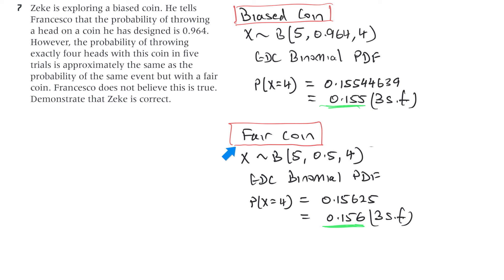And then with the fair coin, that would be X is distributed binomially. Again, it's five trials. The probability for a fair coin is 0.5. To get four heads, you'd enter this in. Again, it's GDC binomial PDF and you've got 0.15625, which is 0.156 to three significant figures. And look at that. They are pretty close.